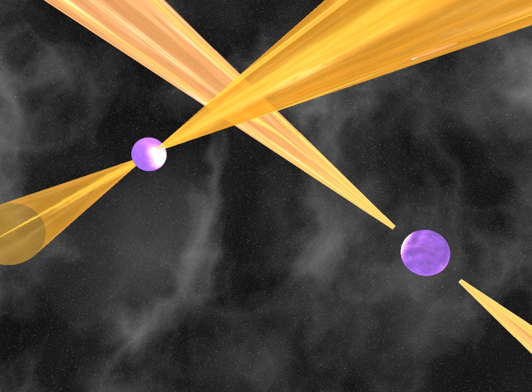Prior to 2015 and the operation of Advanced LIGO, binary pulsars were the only tools scientists had to detect evidence of gravitational waves.